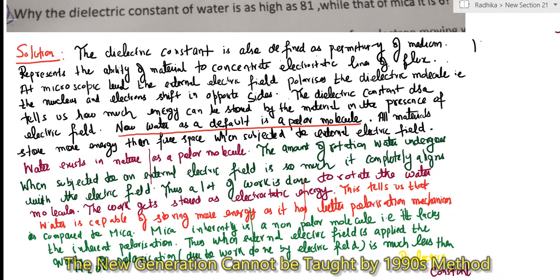Now when you apply external field to water molecules, water molecules are already polarized by default—that is the way they exist in nature—and when you apply the external electric field,